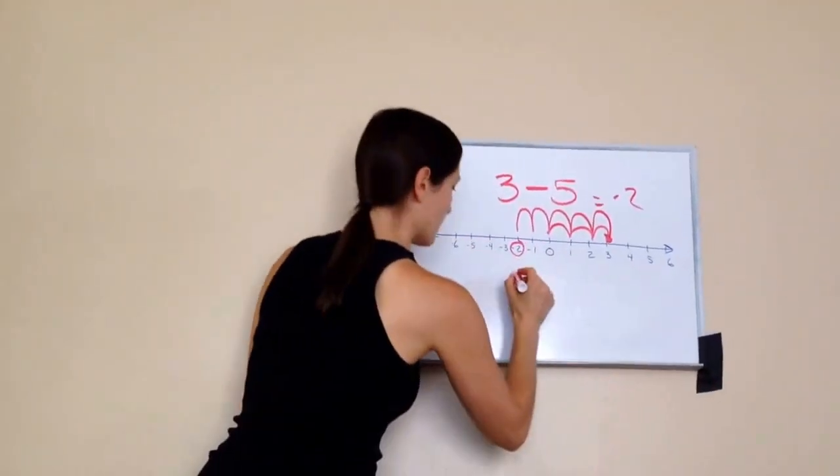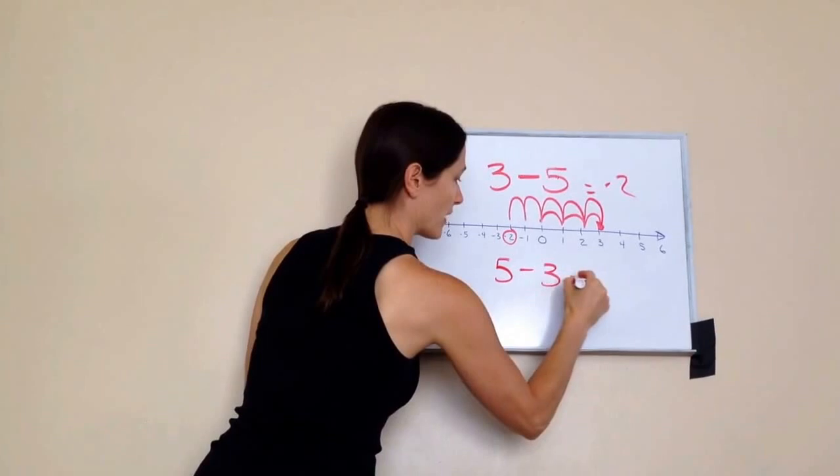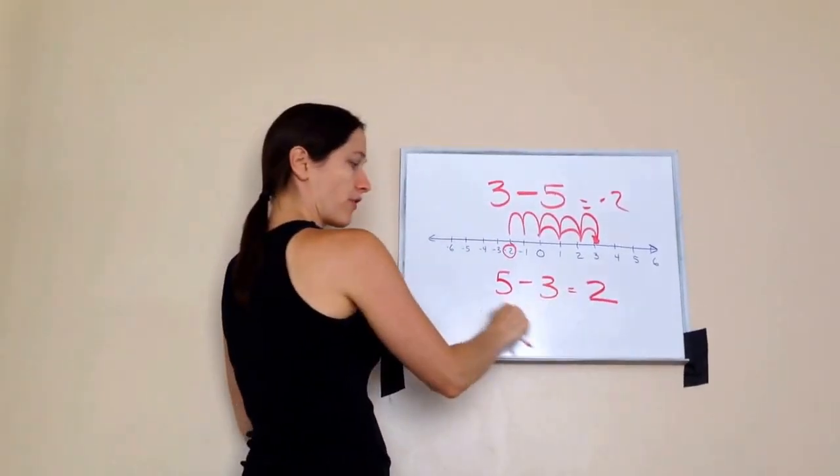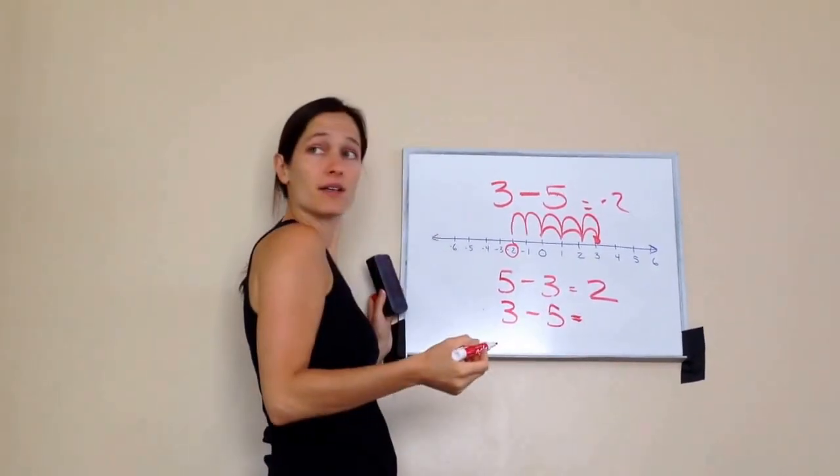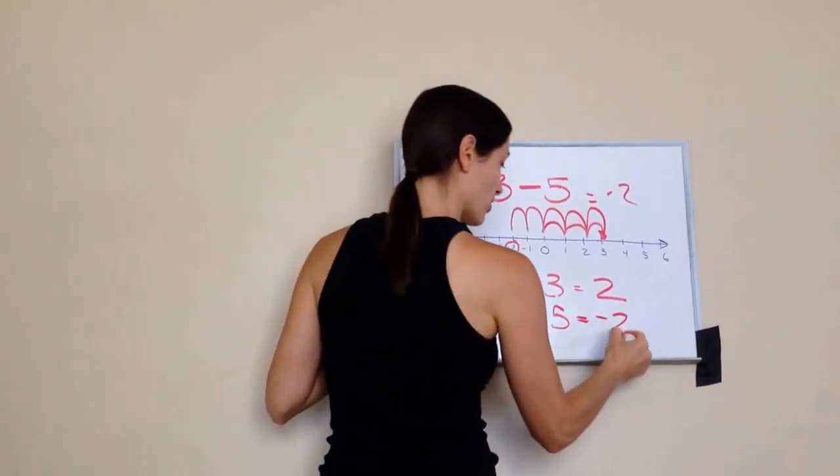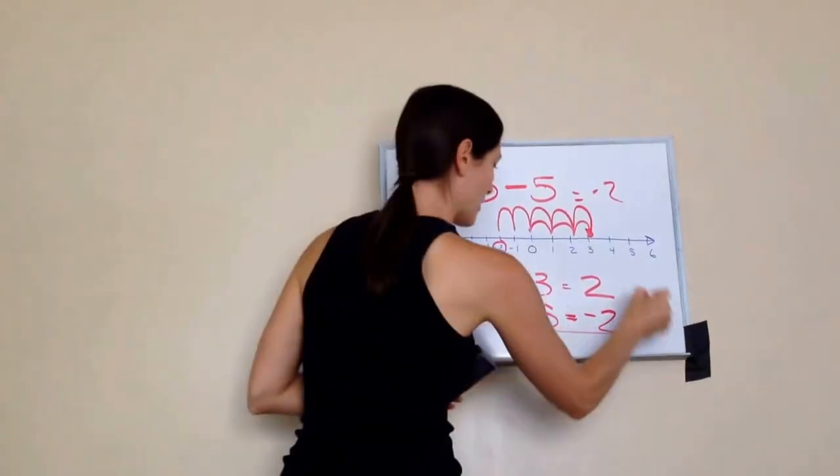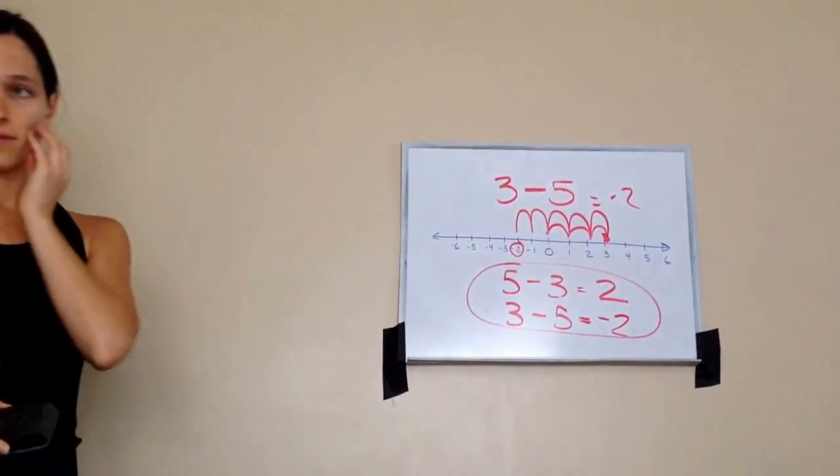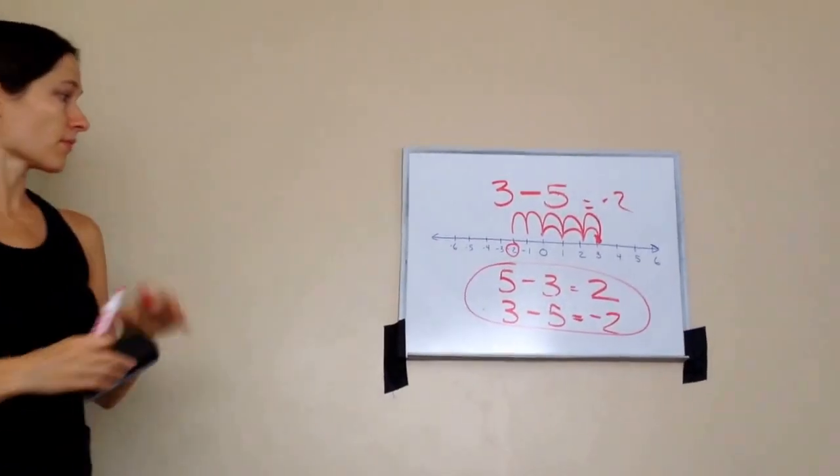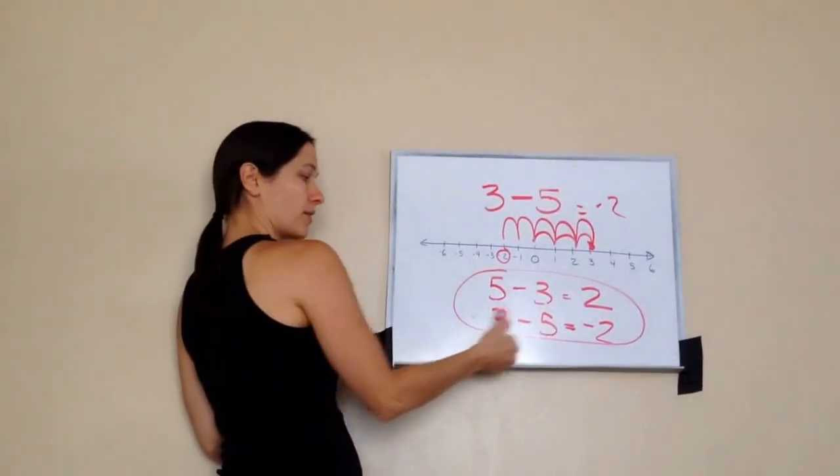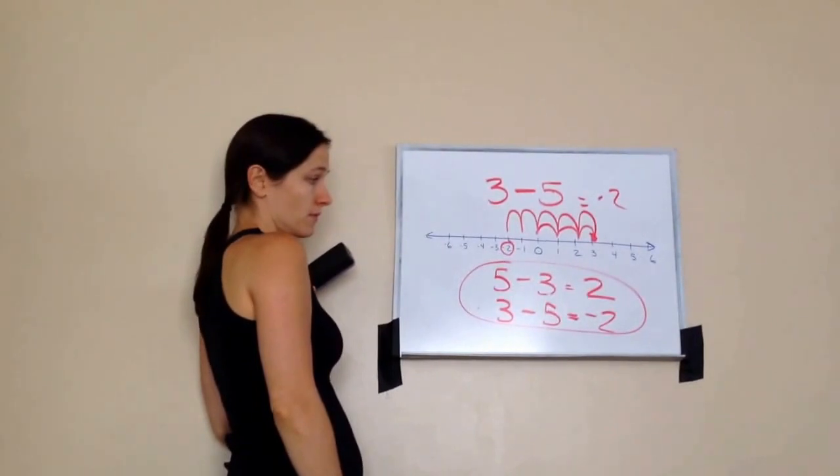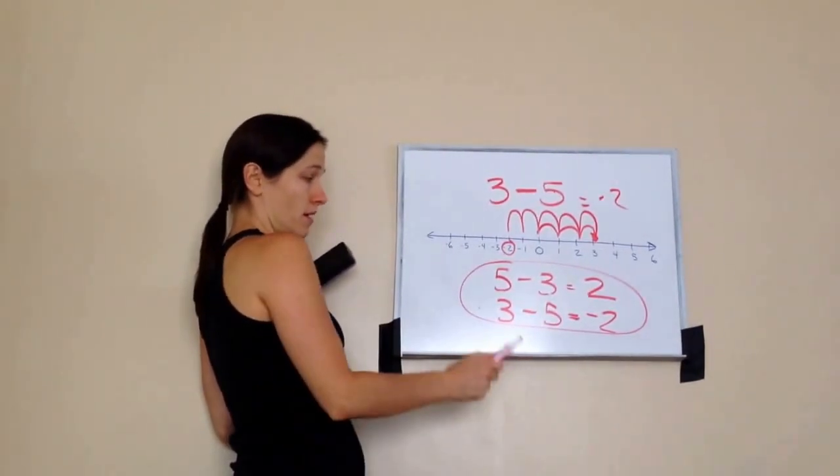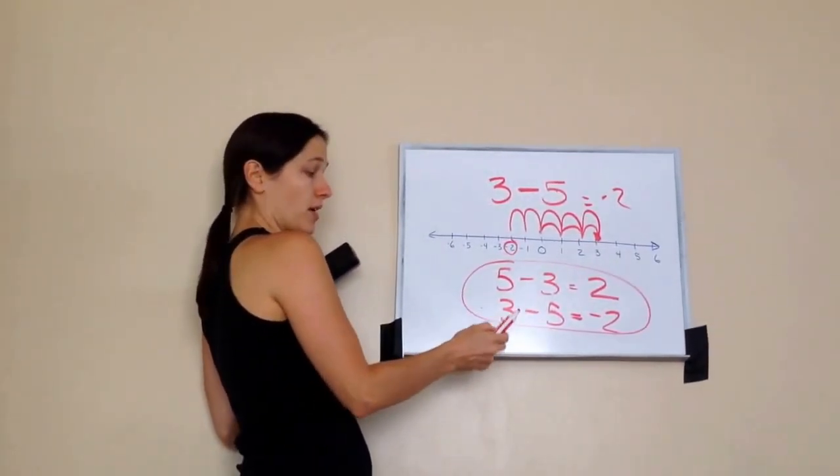And so what I want you to see is a while ago we did 5 minus 3 and we got 2. Then when we reversed them and we did 3 minus 5, what did we get? A negative 2. So what do you see about this, Isaac? Pay attention to it. What do you notice? Is that it both comes to a 2. But one's negative, one's positive. Right.